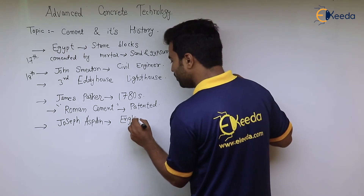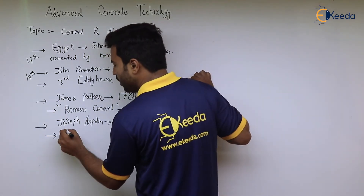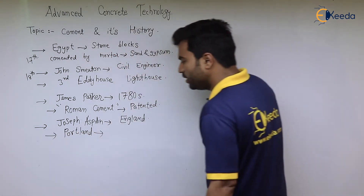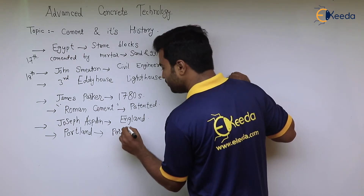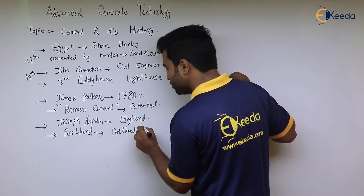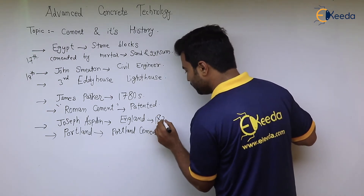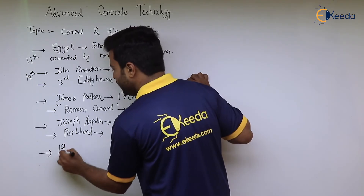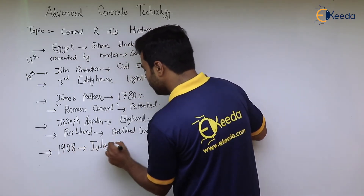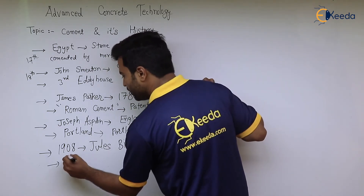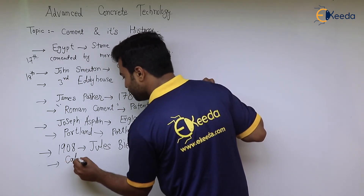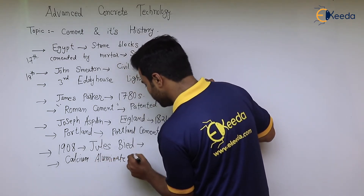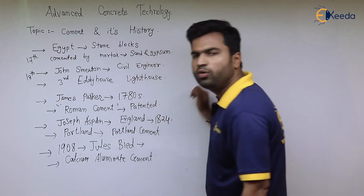A very important contribution was made by Joseph Aspdin, who was from England. In 1824, he made a cement from a stone called Portland stone, which is why the cement is known as Portland cement — very commonly used today. After that, in 1908, Jules Bied patented a cement called calcium aluminate cement.